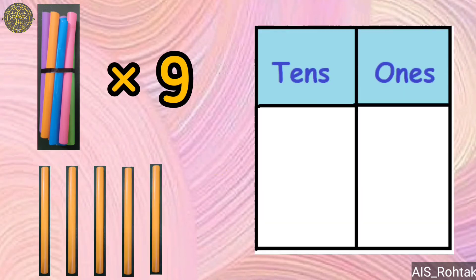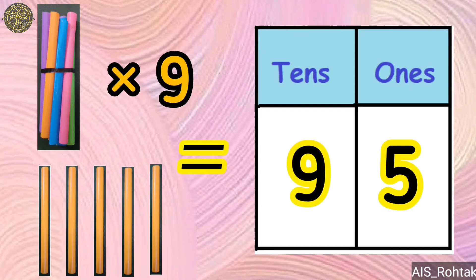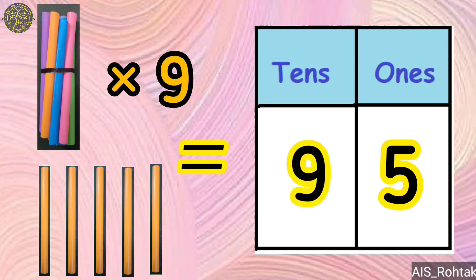Nine bundles and five loose sticks make the number 95 — nine tens and five ones.